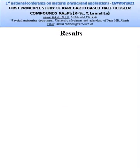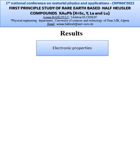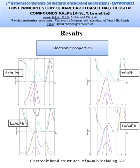The electronic properties are calculated in the ground state. The electronic band structures of the four compounds show that they exhibit semi-metallic behavior in their ground states.